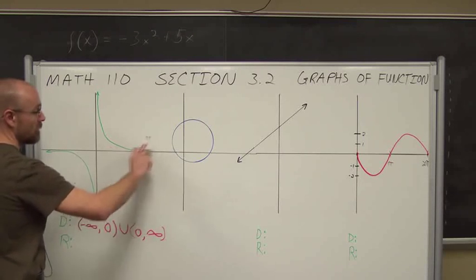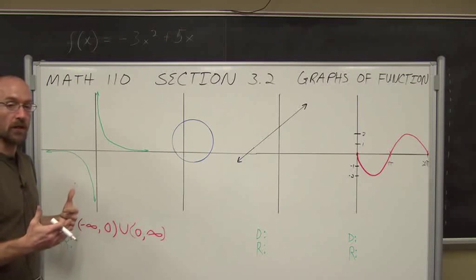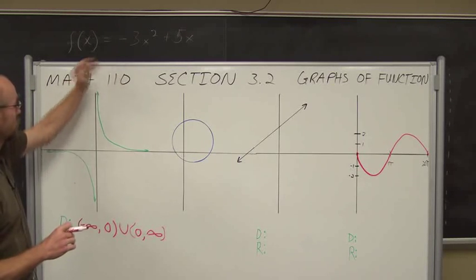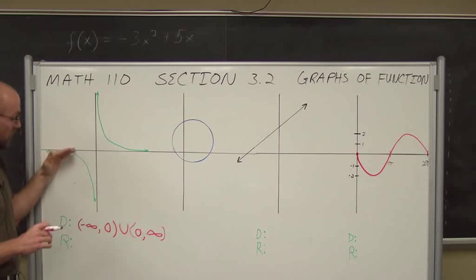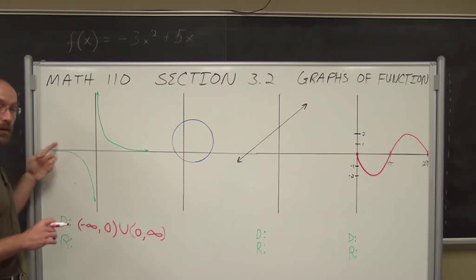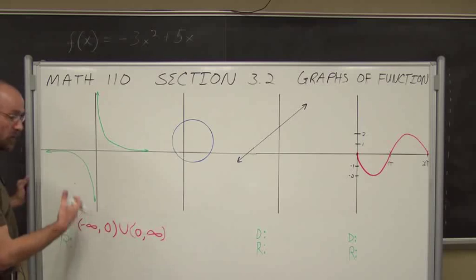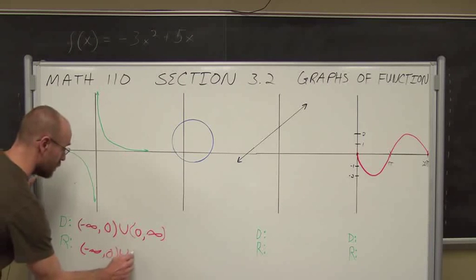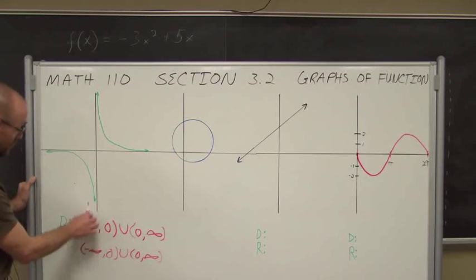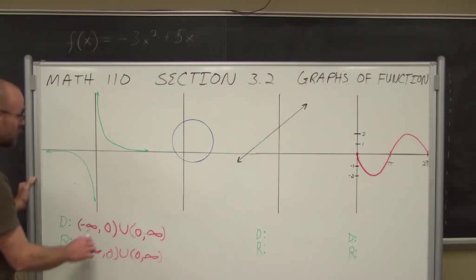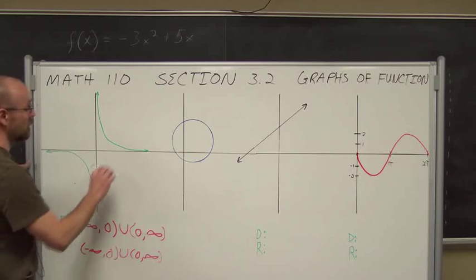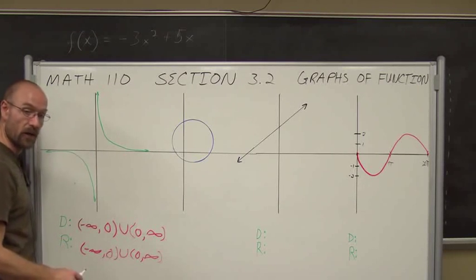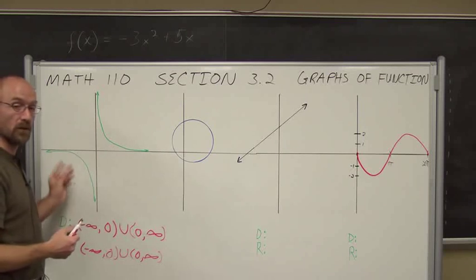As the graph moves, it gets infinitely closer to the y-axis but never touches it, and union from 0, not included, to positive infinity — this arrow indicates it goes on for infinity. For the range, this line never goes through the x-axis, but there are values above and below it. So the range is every value except y equals 0: from negative infinity to 0, union 0 to infinity. We have the domain and range of this function, and we know it is a function because it passed the vertical line test.